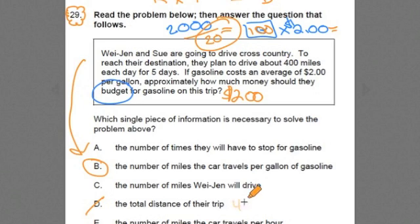You know, 400 times five, 400 miles per day times five days is going to get you the total distance of the trip. So, that one, that's already answered. It's not a missing piece of information.